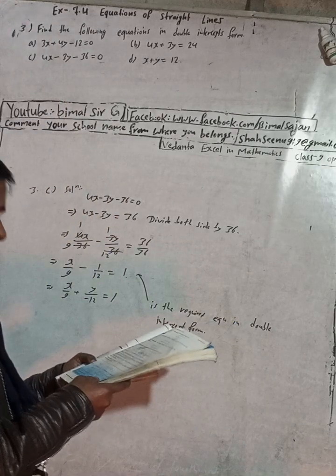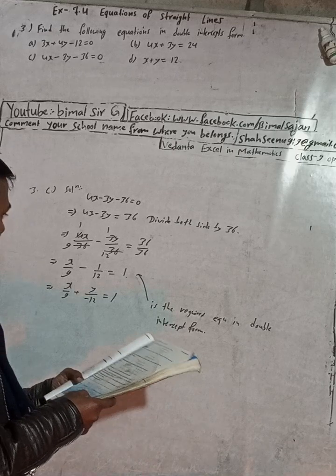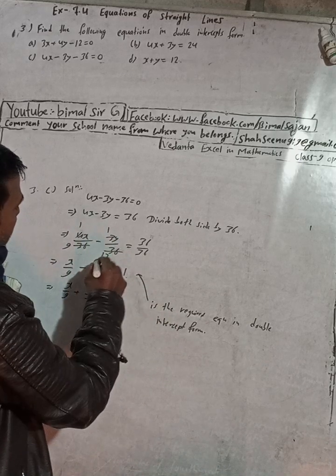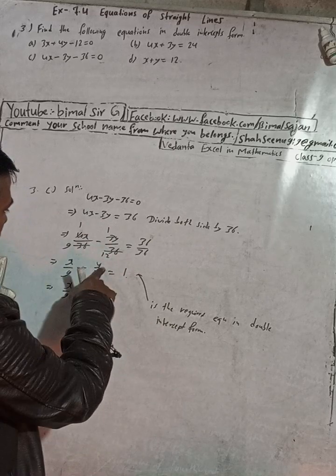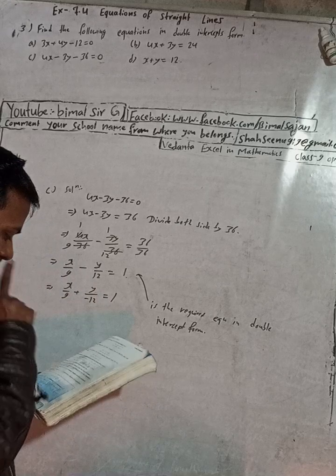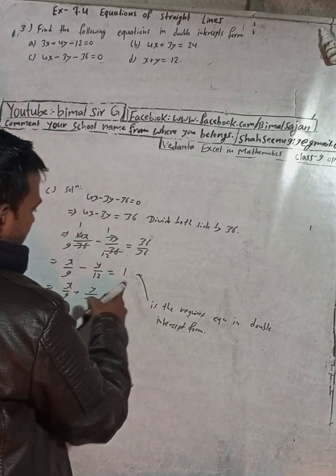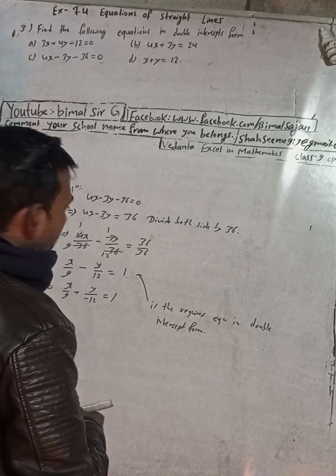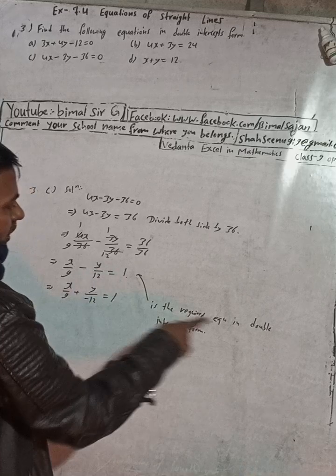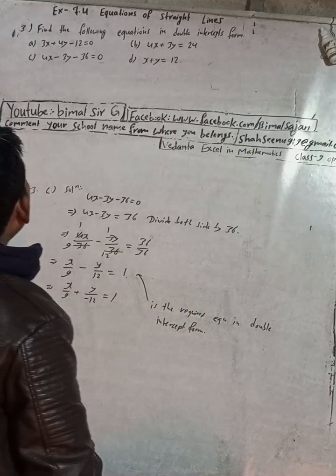In the book, the answer for 3c is x/9 minus y/12 equals 1. I forgot to write y earlier — the 1 into y is just y. So y/12. This is the correct answer. You can write either form; this is the best one. This is the required equation in double intercept form.